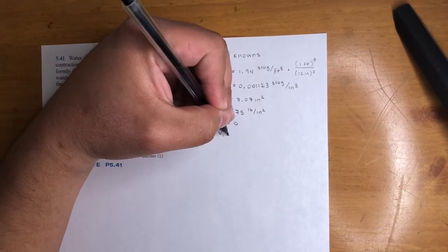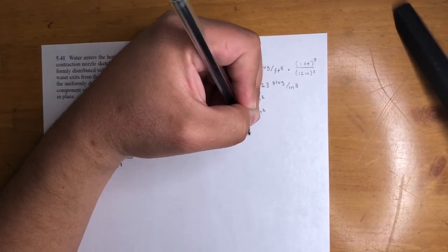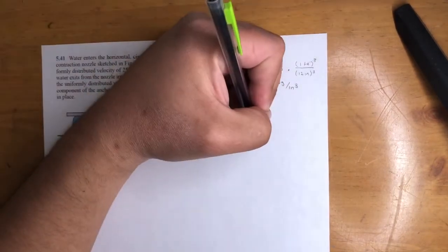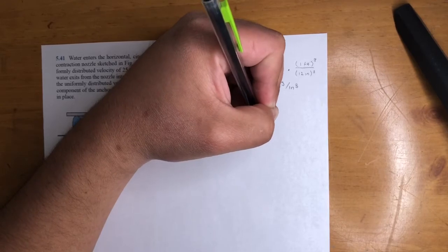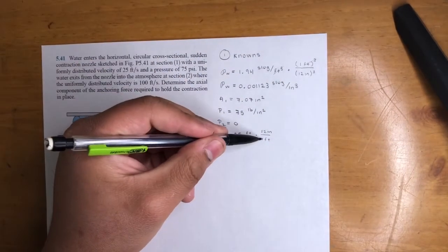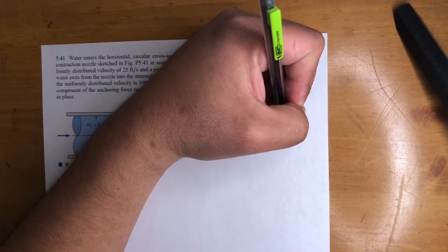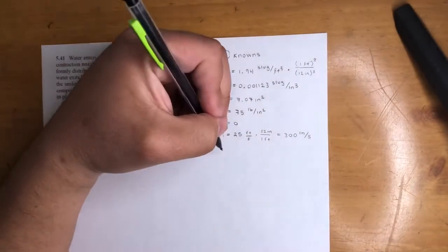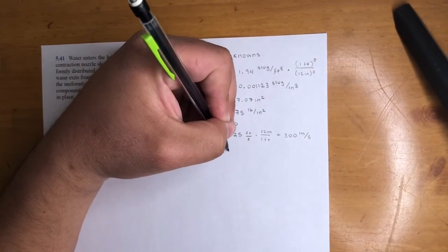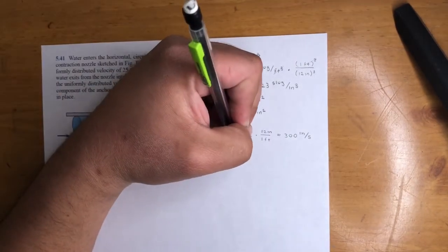V1, that is 25 feet per second. Again, times the conversion, which is 1 foot is 12 inches. Feet cancel out. So V1 is actually 300 inches per second. And similarly with V2, it's 100 feet per second. So I'll write it down.